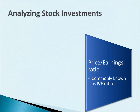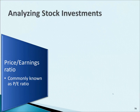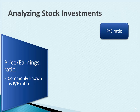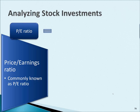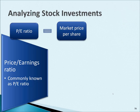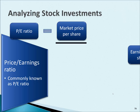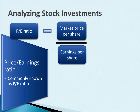The next ratio is really helpful in analyzing stocks as investments — it's called the PE ratio, the price-to-earnings ratio. No one calls it the price earnings ratio; everyone calls it the PE ratio. The P stands for market price per share and the E stands for earnings per share, so both numbers are per share, allowing you to compare them. It's the price of the stock divided by the earnings per share of the stock.